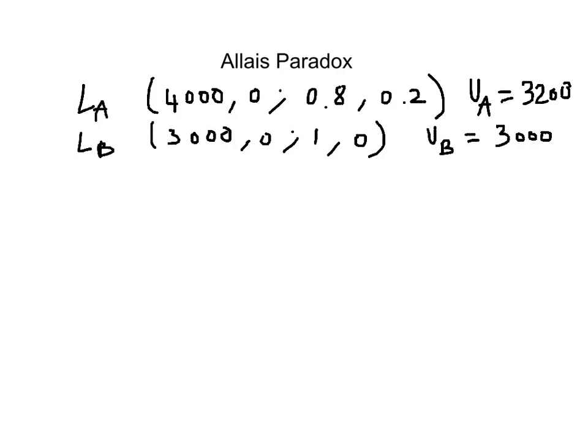Now if I was choosing according to expected utility theory, I should choose Lottery A because it has a higher expected utility. But as it turns out, most people choose Lottery B, empirically speaking. And one of the reasons is that there tends to be a premium to certainty. So the fact that this $3,000 is given with 100% certainty is given extra weight in terms of decision making.